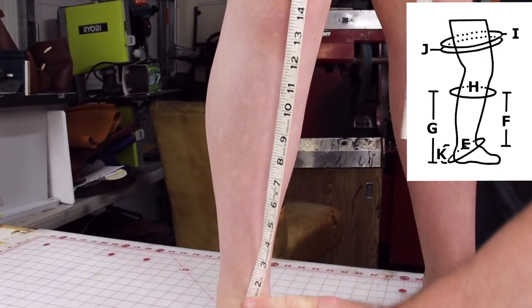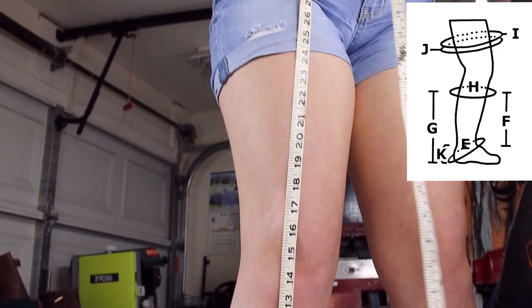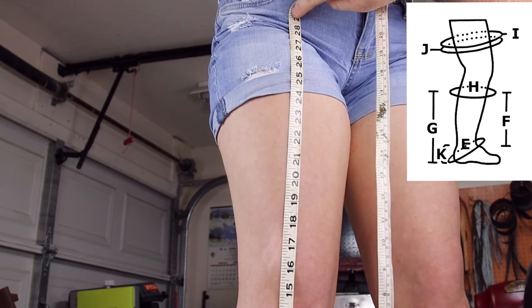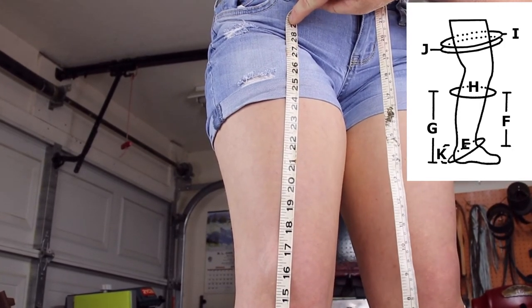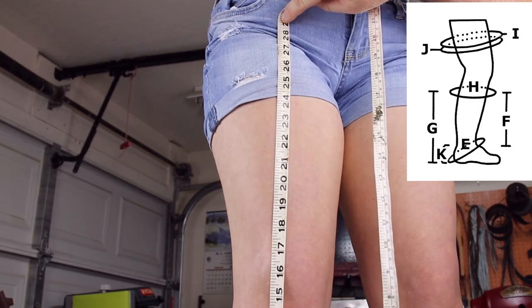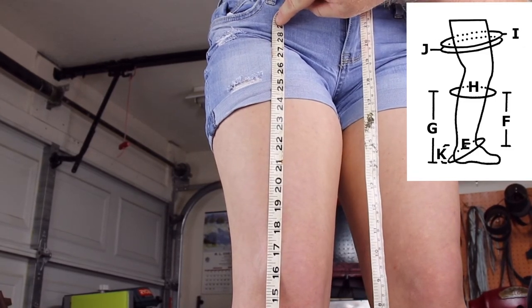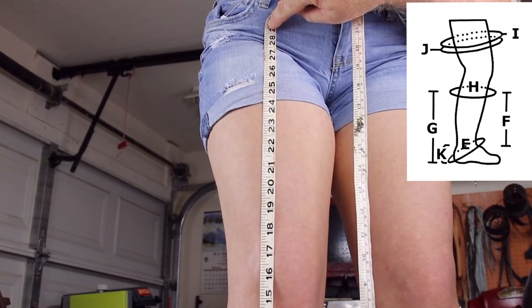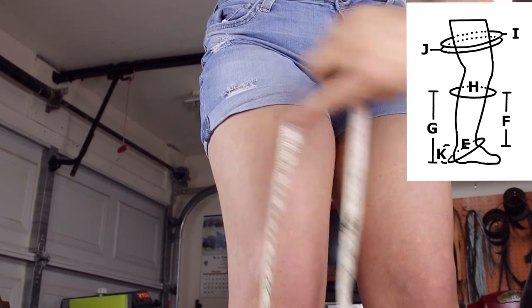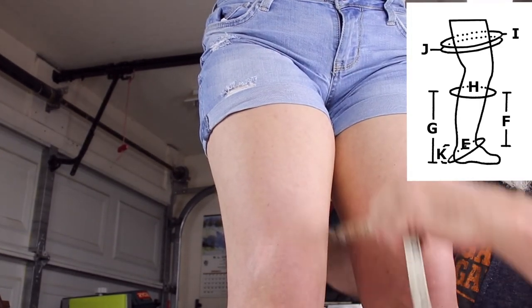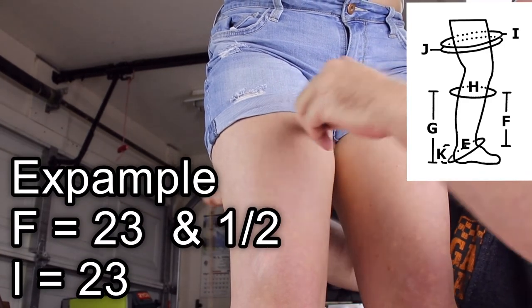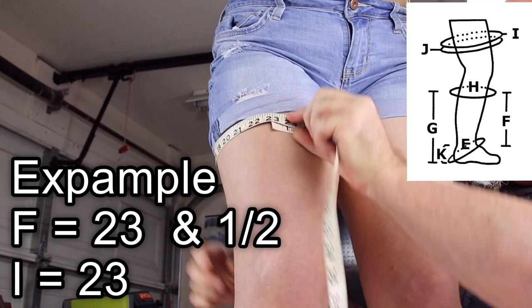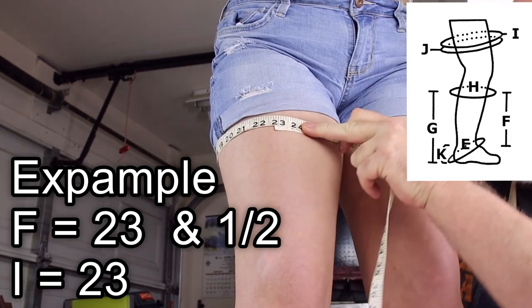For a tall campaign boot, I would prefer not to make the boot any taller than when your feet are shoulder width apart that the skin is touching. So I can see on this particular person that that measurement looks to be 23 and a half. And that's right about there. So F will equal 23 and a half, and I will equal 23.